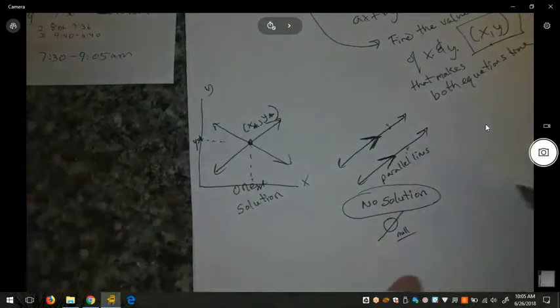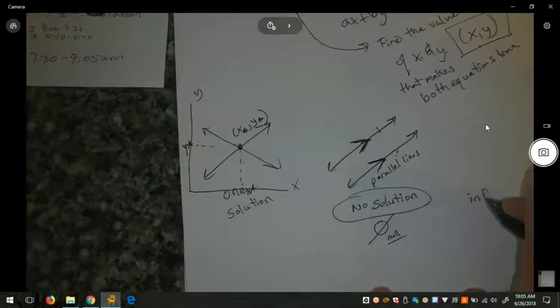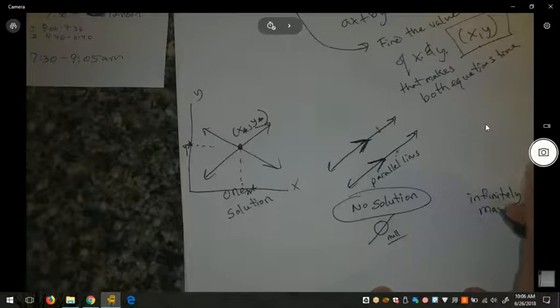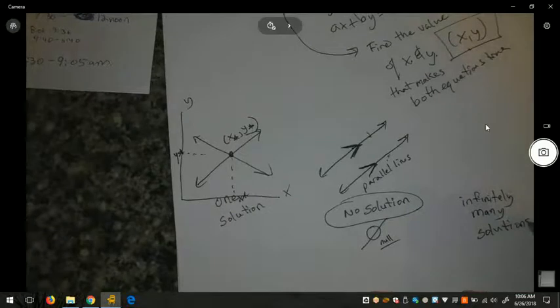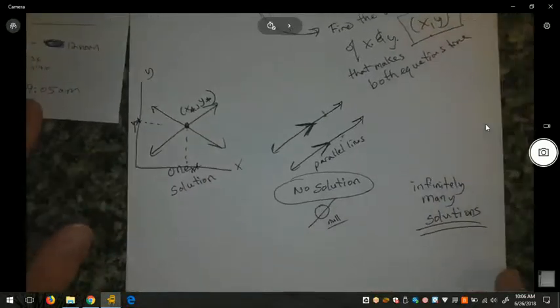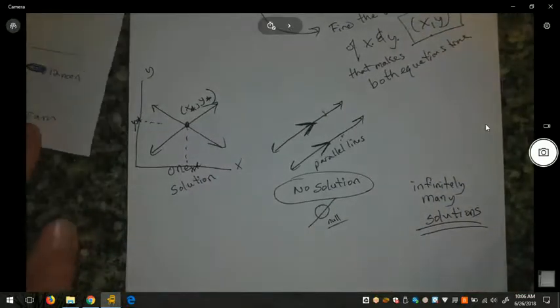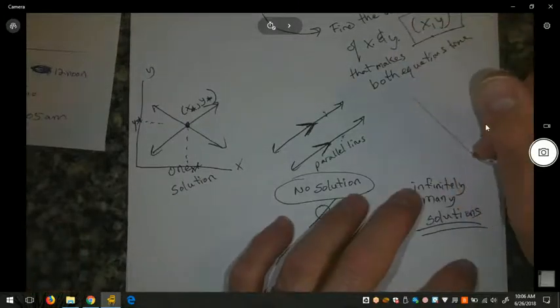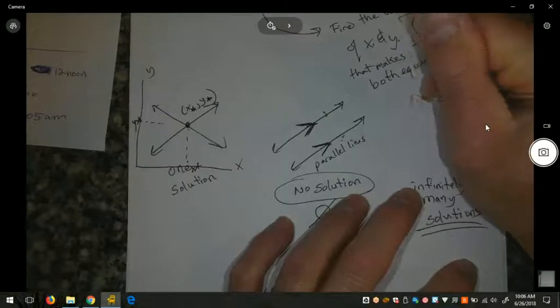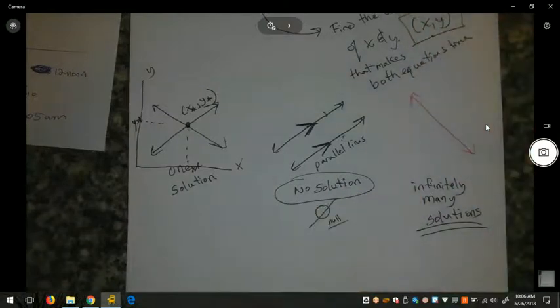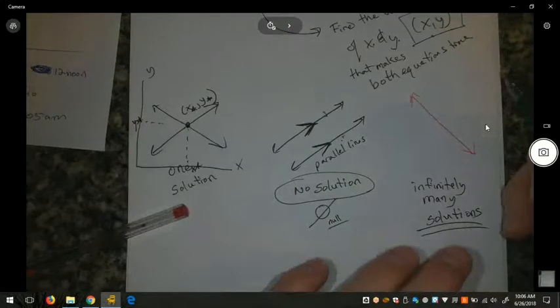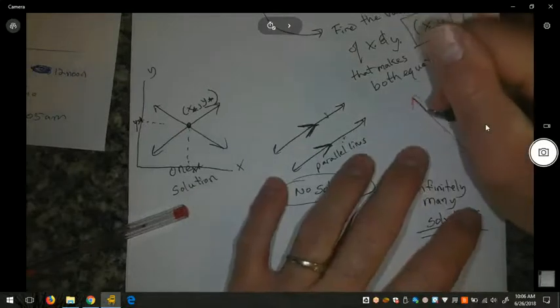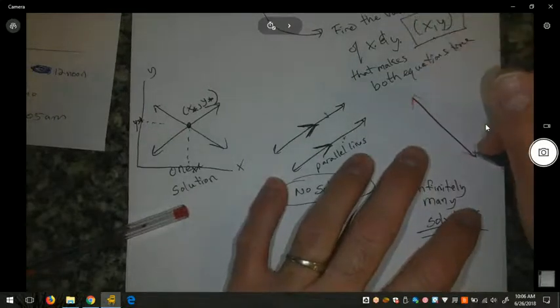It's also possible for us to have infinitely many solutions. That doesn't mean that every point in the coordinate plane is a solution, but that means that there are infinitely many, we can continue finding them, solutions to this. So for example, in the coordinate plane, I have this line that I graph and I graphed its equation. And then I found another equation. Maybe it was in a different form. And when I went to graph it, it ended up being the same line.